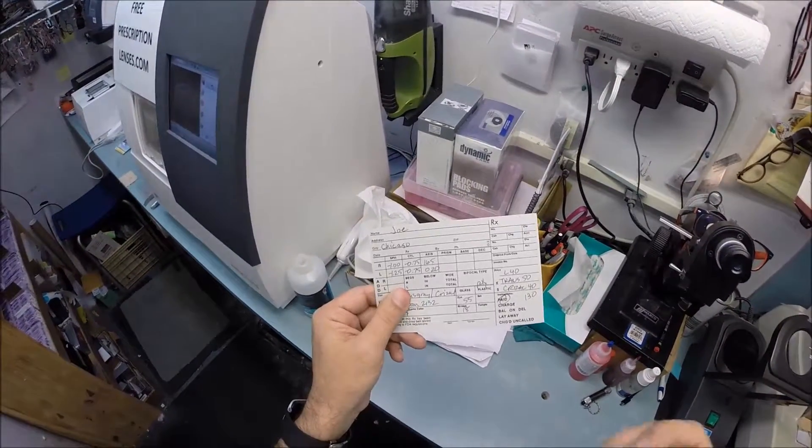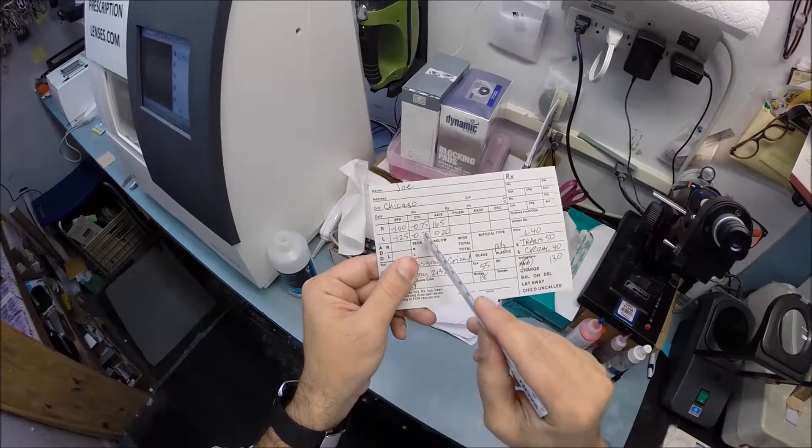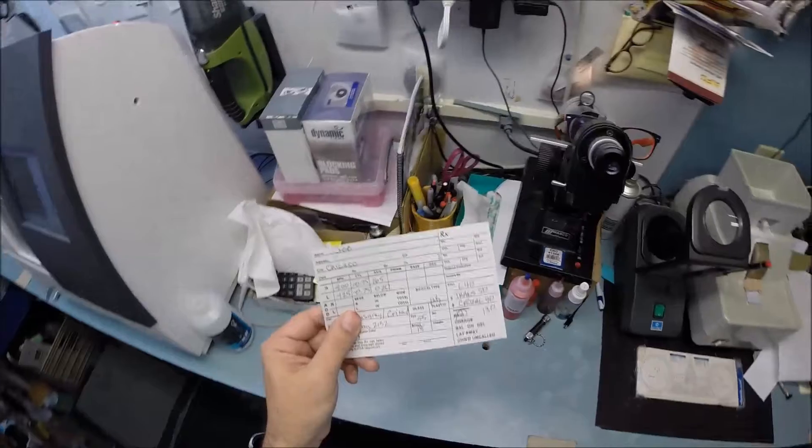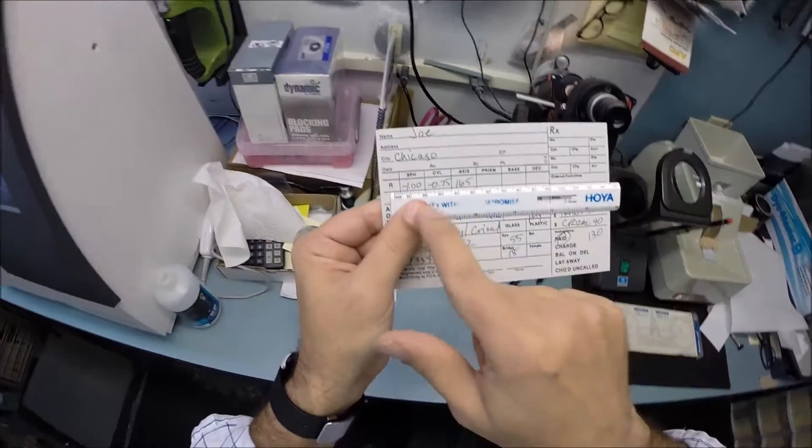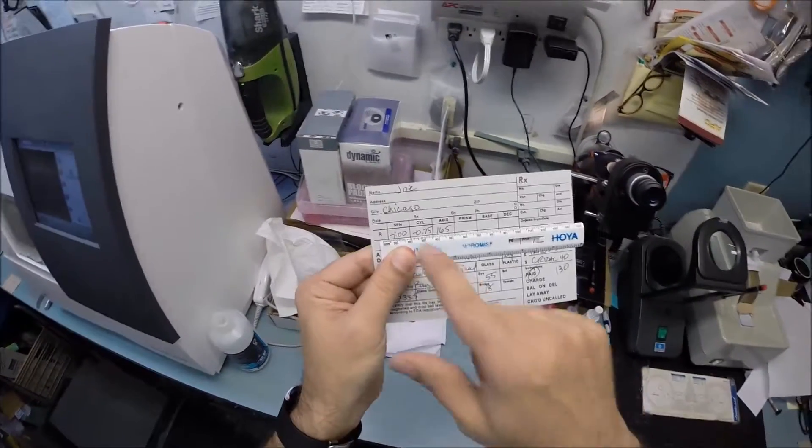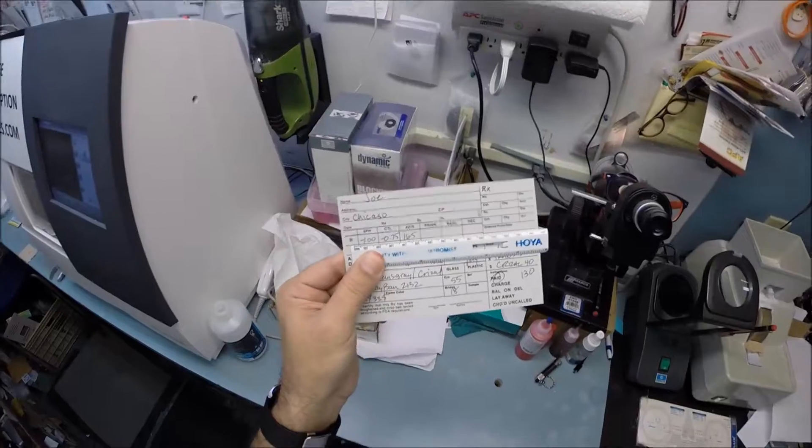The unit of measurement we use in the optical world is called a diopter. It goes in quarter increments starting at zero: 0.25, 0.50, 0.75, 1, 1.25, 1.50, 1.75, 2, and so on. Without your glasses on, your right eye reads minus 1 minus 75 at 165.